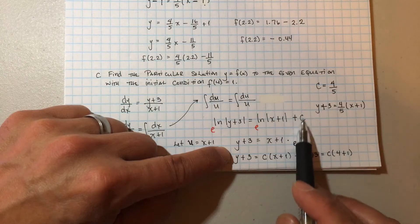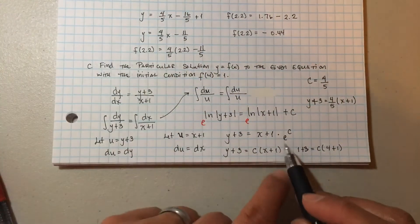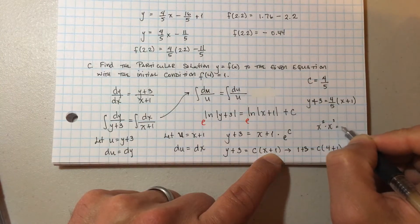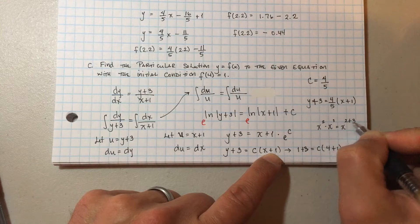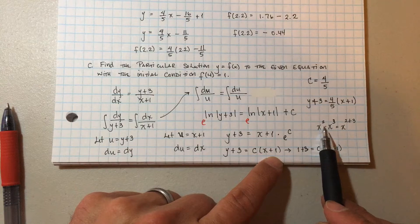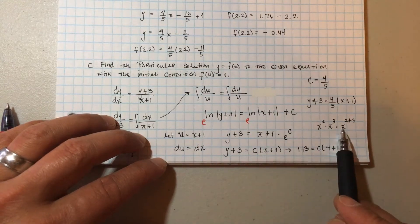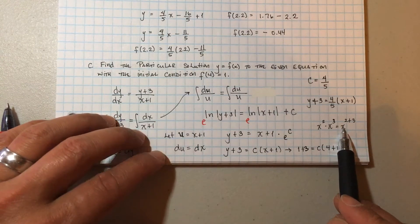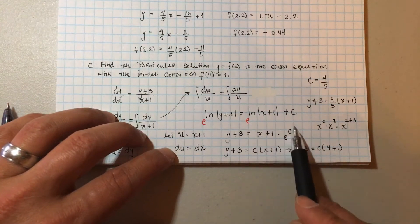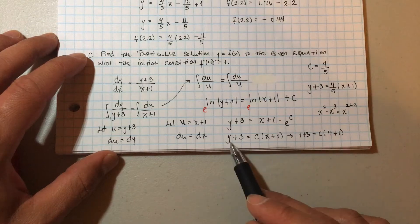When you raise to the power of e, the left side simplifies to y + 3. On the right side, everything is being raised — it's e to the whole expression. Remember x² · x³ = x^(2+3); we go backwards and separate it because they share the same base of e. So e to this term gives x + 1, and e to the c is just a constant C.